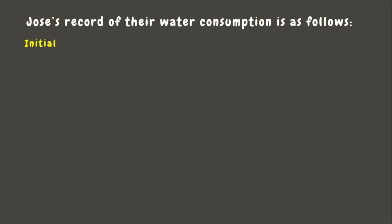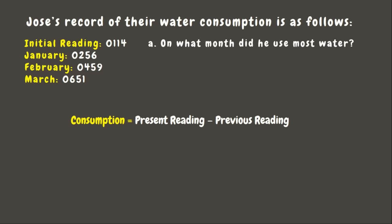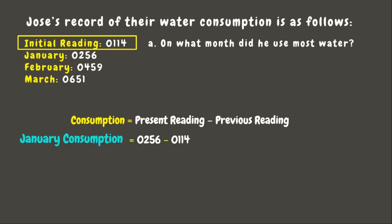Now let's have another kind of meter problem. A process record of water consumption is as follows: the initial reading was 0114; for January it's 0256; February 0459; and March 0651. The first question is: on what month did the consumer use the most water? We need to determine the consumption for each month. The consumption for January: present reading 0256 minus previous reading 0114 equals 142 cubic meters.